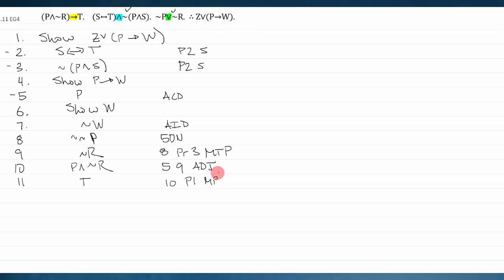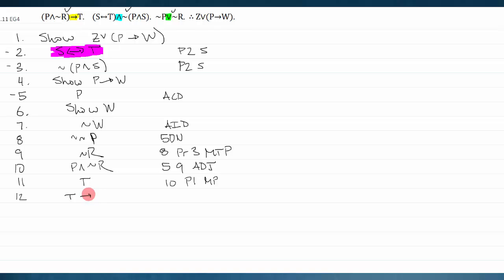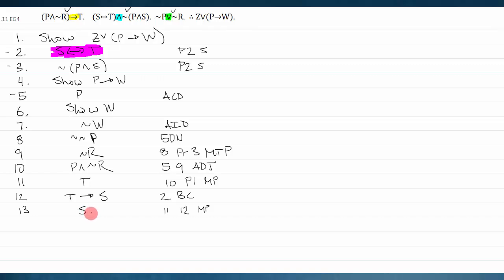Now what does t give me? I've dealt with premises one, two, and three, but I haven't used line two — the biconditional s biconditional t. I want to split it up. I'll split it into t arrow s, using the biconditional-to-conditional elimination. Then t and that conditional clearly combine using modus ponens to give me s.